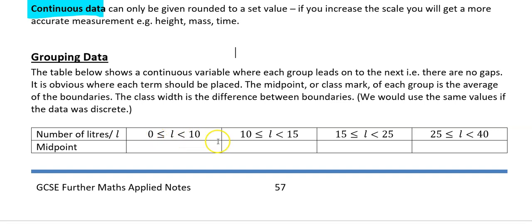This one goes from 0 to 10, then this one goes from 10 to 15, and this one goes from 15 to 25. The cutoff point between these is 10 — so the upper boundary of the first one is 10 and the lower boundary of the next one is also 10. The upper boundary of this one is 15 and the lower boundary of the next is 15. To get the midpoints, all you do is add the lower boundary and the upper boundary and divide by 2. Lower boundary was 0, upper boundary was 10 — 0 plus 10 divided by 2 is 5. So we'll put a 5 in here.